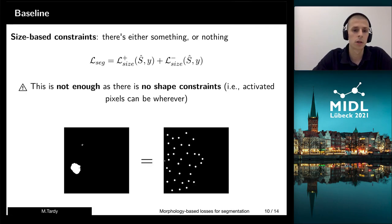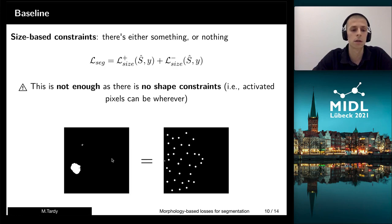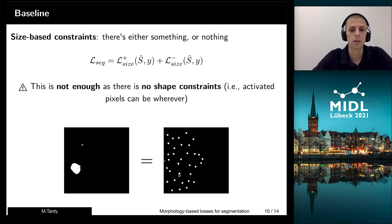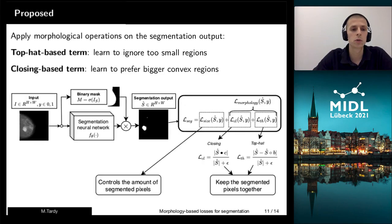But the problem with this approach is that it's actually not enough, because there is no shape constraint. So technically, it's the same thing whether there is one big region or several small spots everywhere. And to cope with that, we propose to use morphological operations.